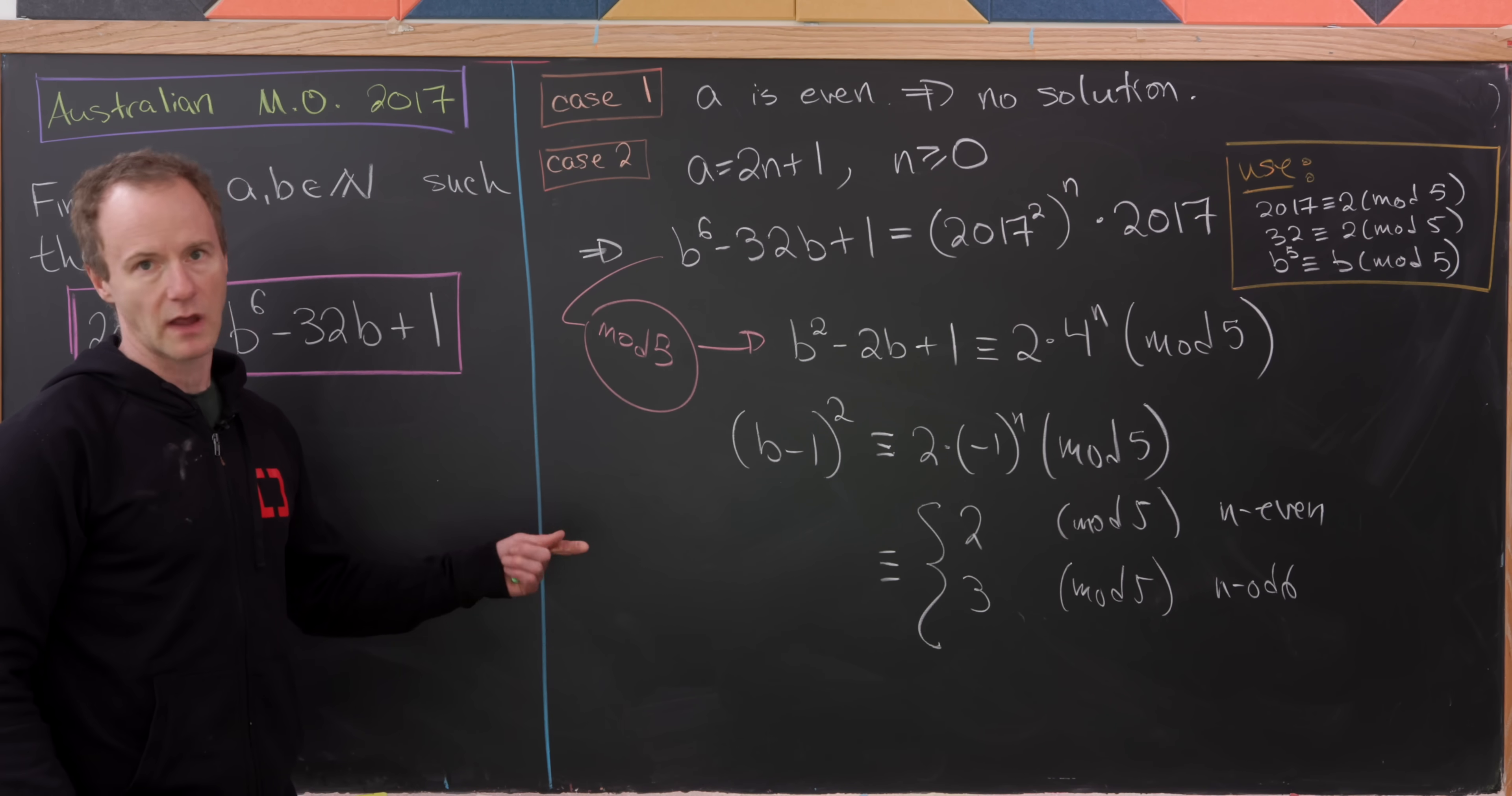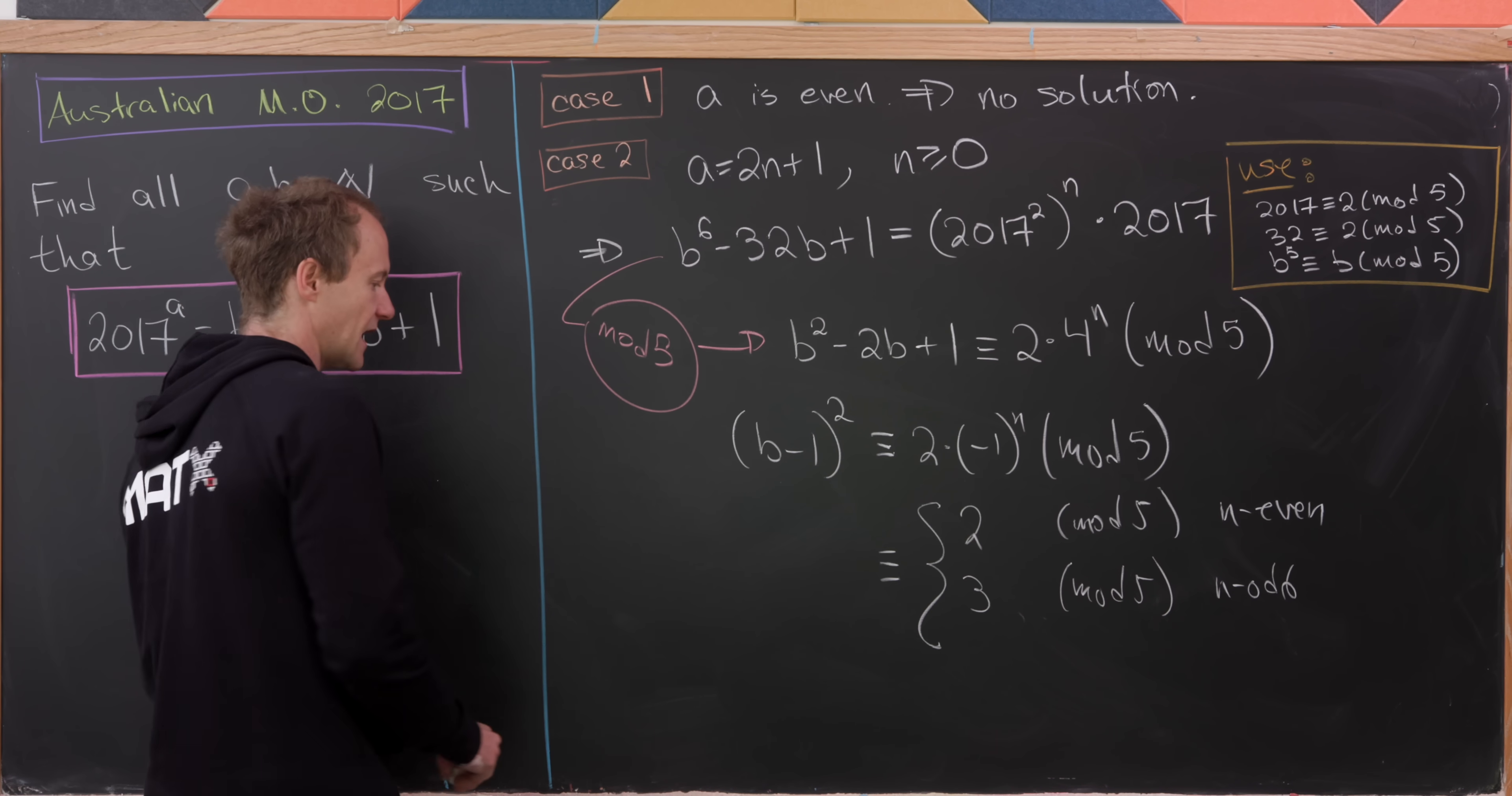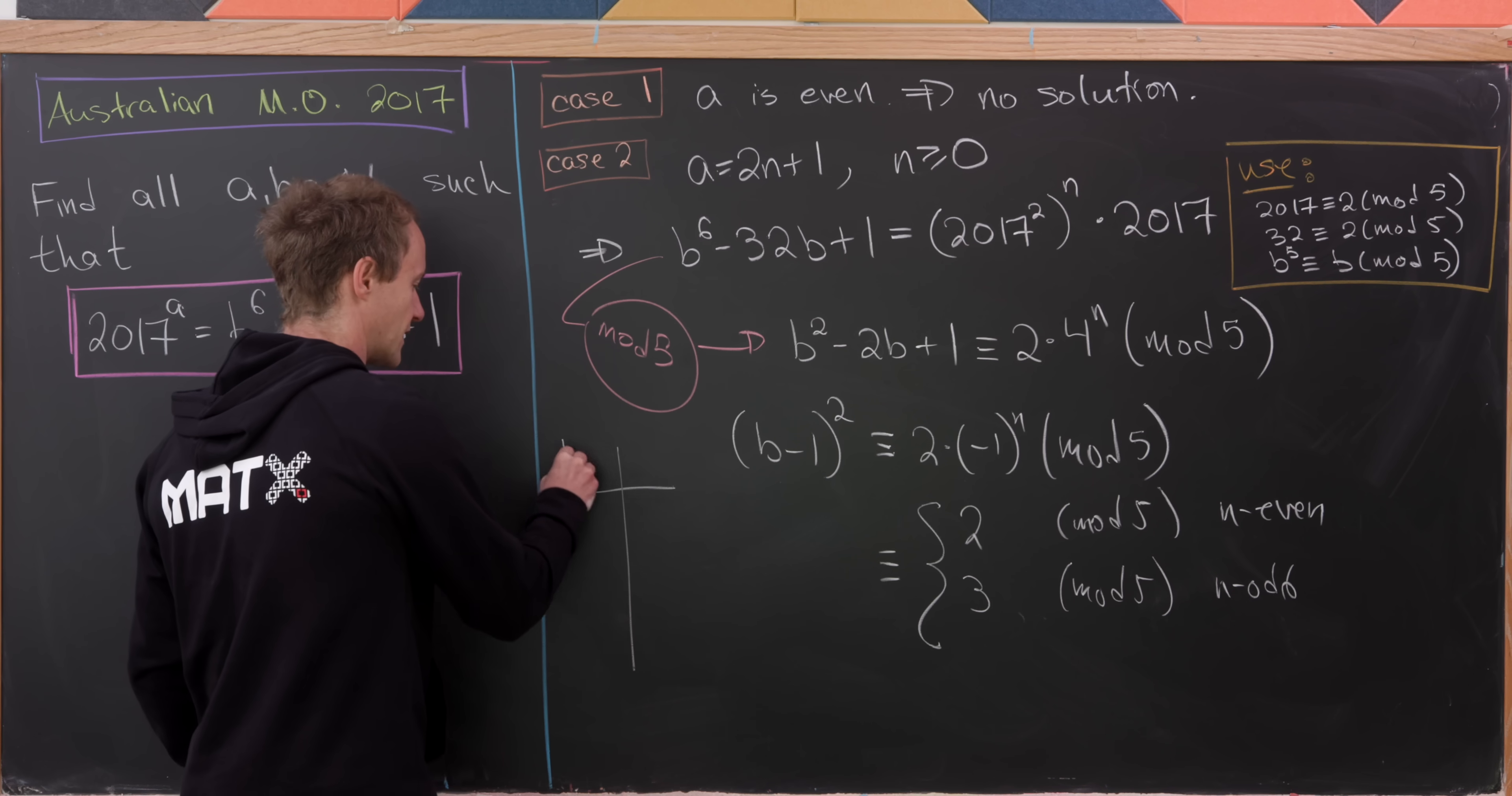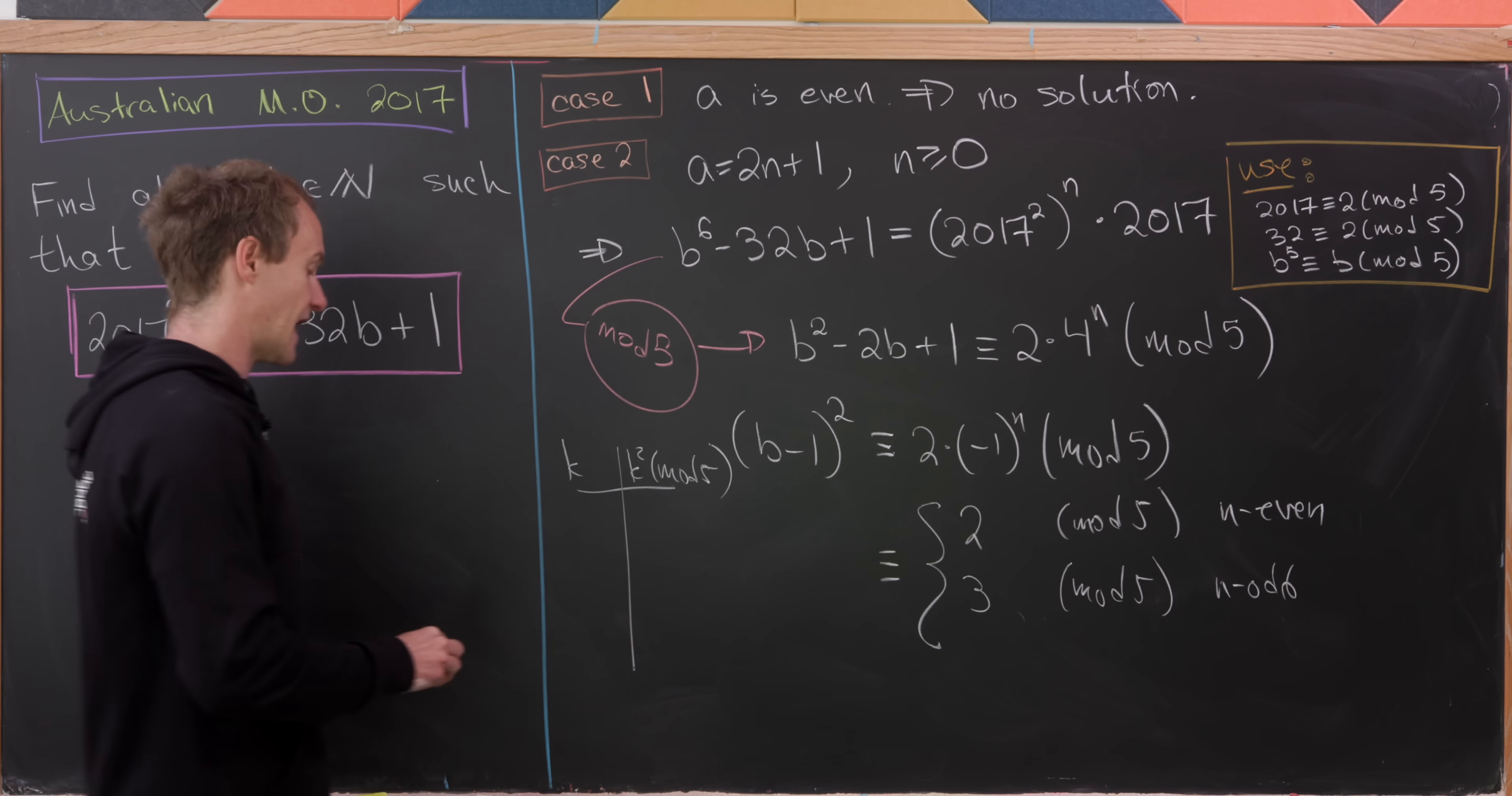But that means that 2 and or 3 are perfect squares mod 5. But of course, they're not perfect squares mod 5. And we can see that simply by squaring things mod 5. We can look at this quick table of k and k^2 mod 5.